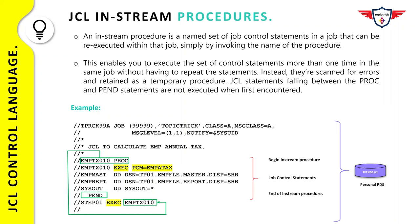After the PROC name you have a couple of job control statements: an EXEC statement to execute a program called EMPATAX, three DD statements — two for data sets and one for SYSOUT to print messages on the spool — and then a PEND statement which marks the end of the in-stream PROC. Finally you have STEP01, which is an EXECUTE statement invoking the in-stream PROC defined in the JCL. You write the step name followed by the EXECUTE statement, then specify the PROC name, or use PROC equals the PROC name — it's your choice.